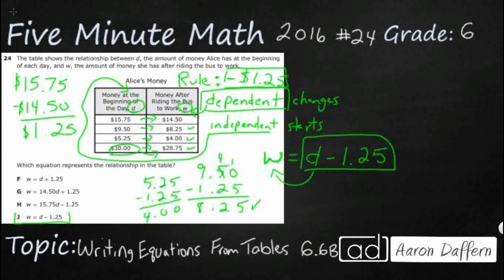Right here. You take your D, minus 125, and you get your W, which is your dependent variable.